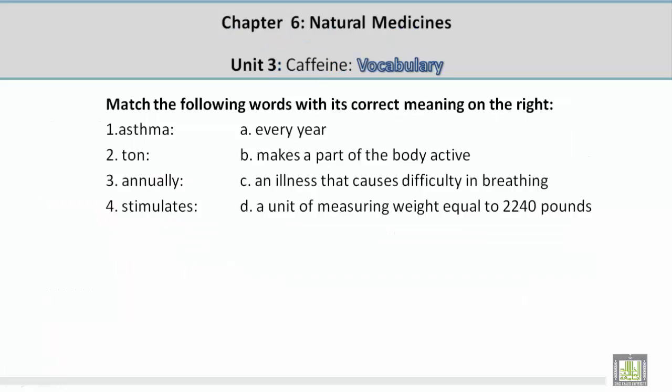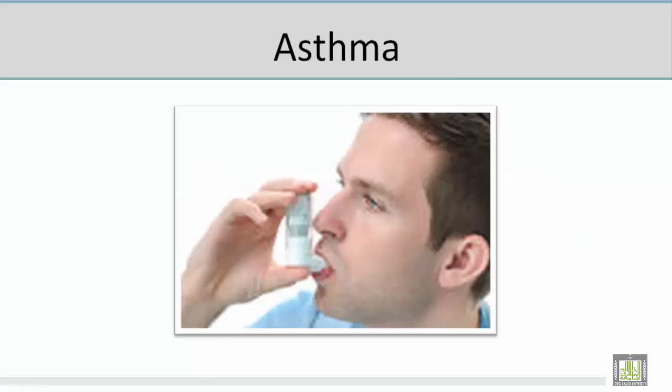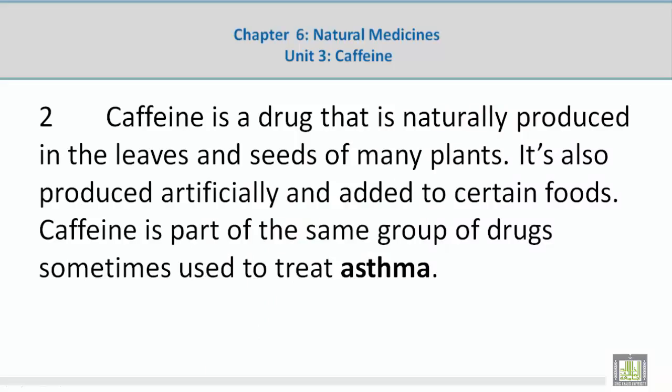Vocabulary word 1: Asthma. The correct meaning is C — an illness that causes difficulty in breathing. Looking at a picture related to the word, Mohamed describes a man using something to help him breathe, having trouble breathing due to asthma. In context: 'Caffeine is part of the same group of drugs sometimes used to treat asthma.'